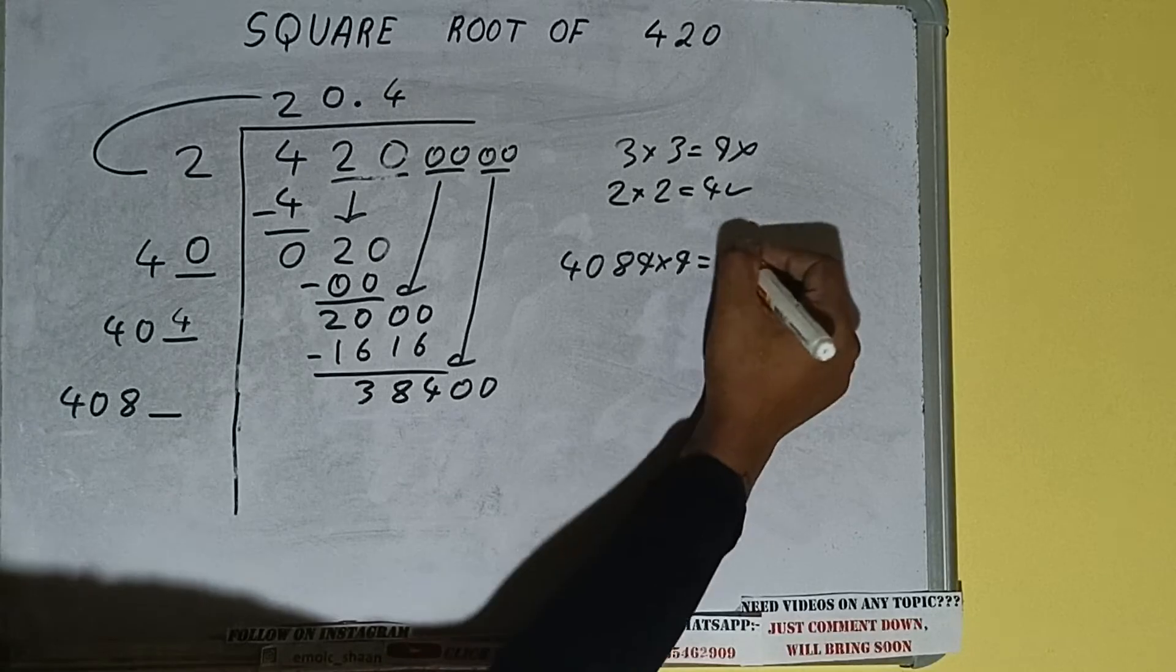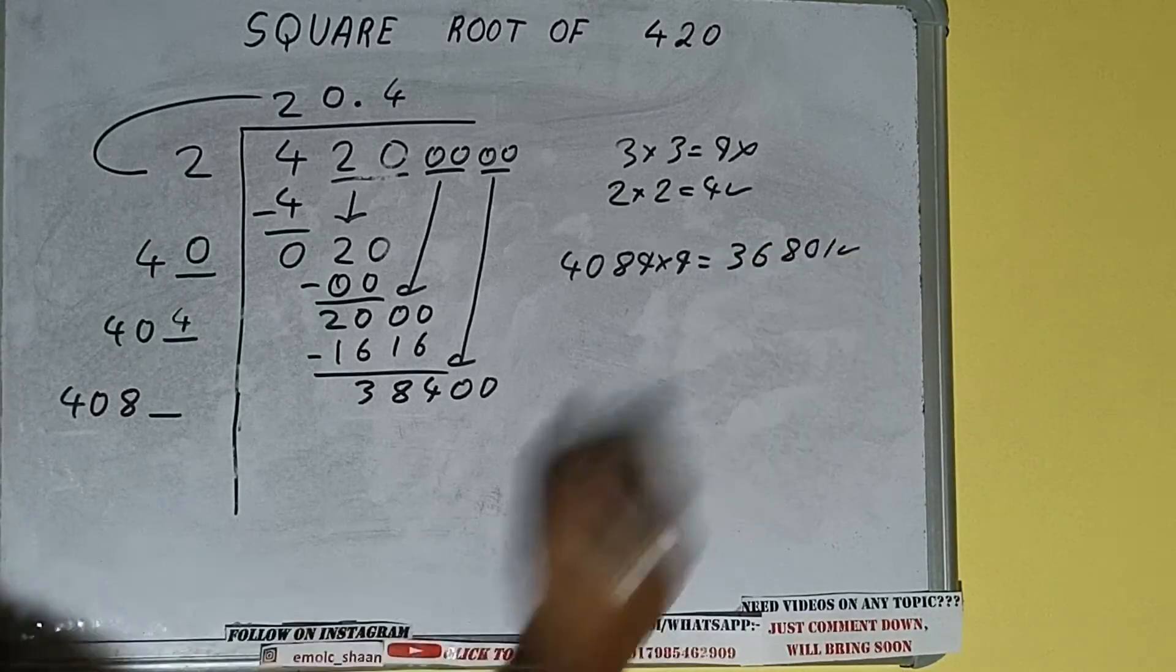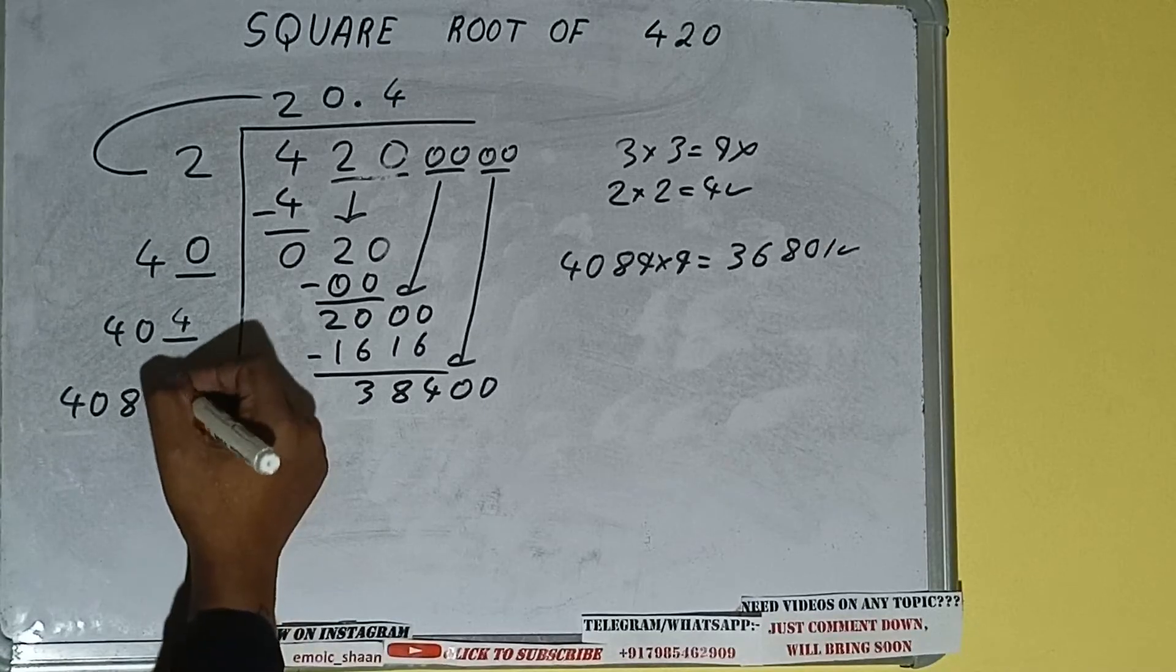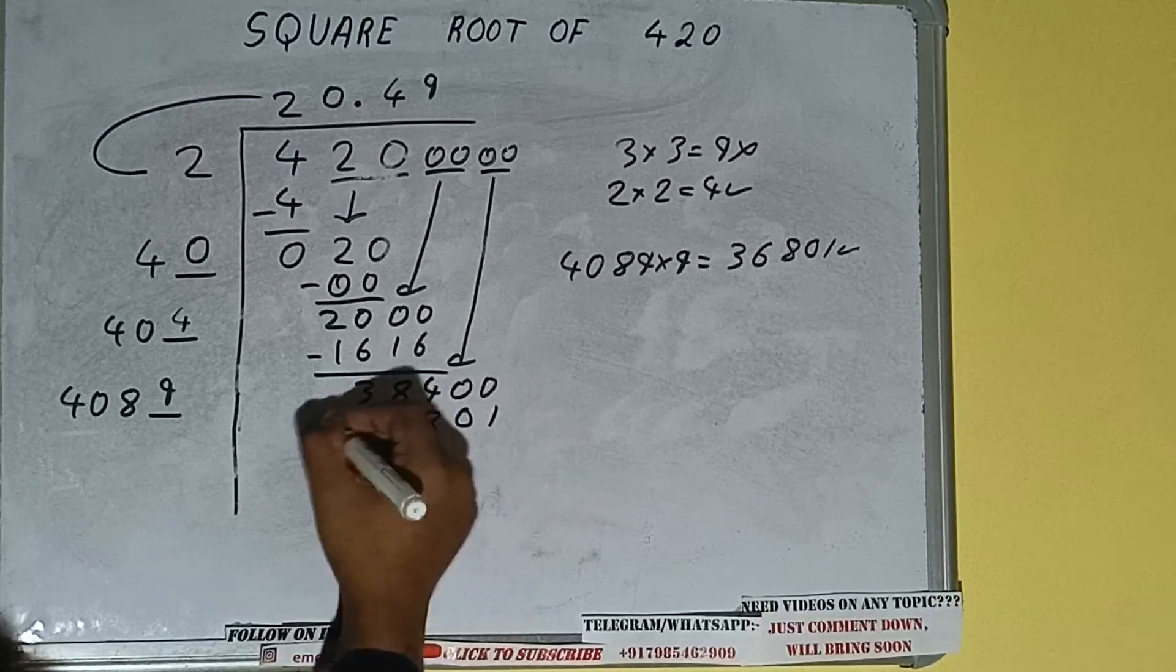And we'll be having 36,801, which is good to take. So 9 here and 9 here. 36,801 subtract.